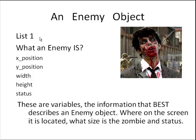What variables do we need in our object to describe our enemy? Things like an X position and Y position — their coordinates in two-dimensional space. A width and a height — we need to know how big this thing is. And a status variable: is this object alive, dying, or already dead?